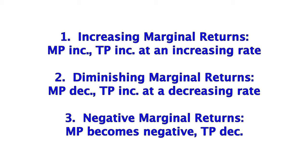Stage two is diminishing marginal returns: when marginal product falls, total product rises at a decreasing rate. This means that when a firm employs additional units of a resource, the additional output added to total product by the next resource will decline. This occurs when variable resources are added to fixed capital goods. Stage three is negative marginal returns: when total product is at its highest, marginal product is zero; when total product falls, marginal product becomes negative.